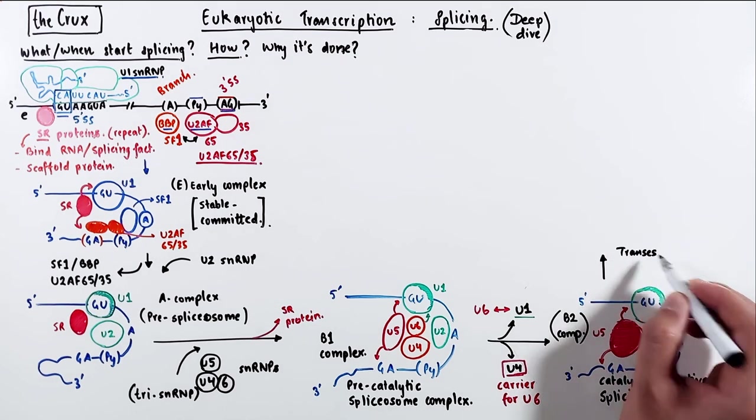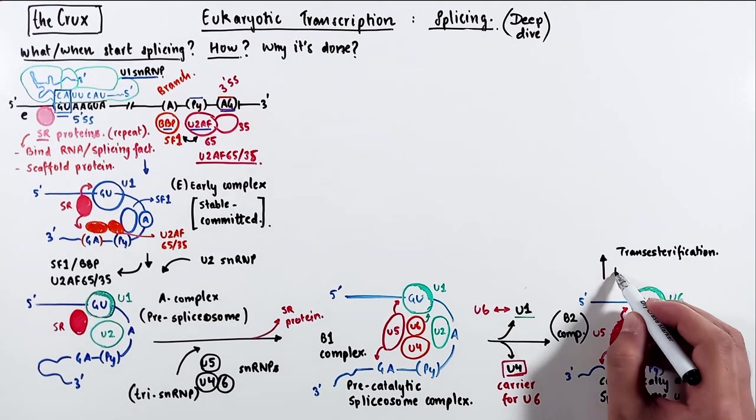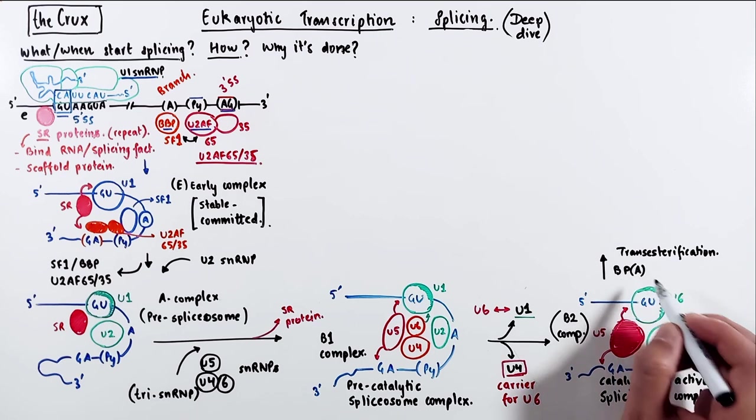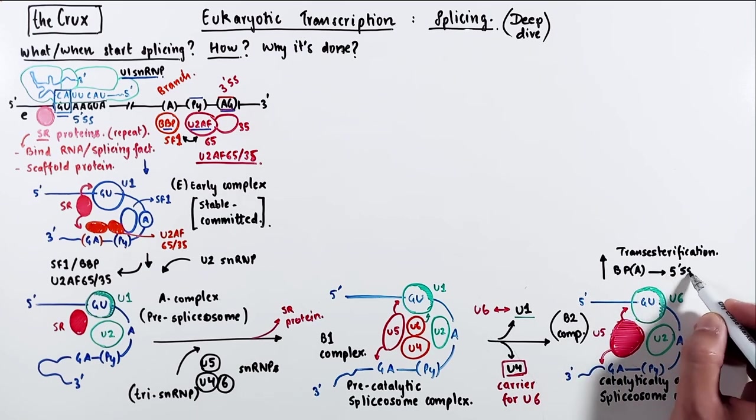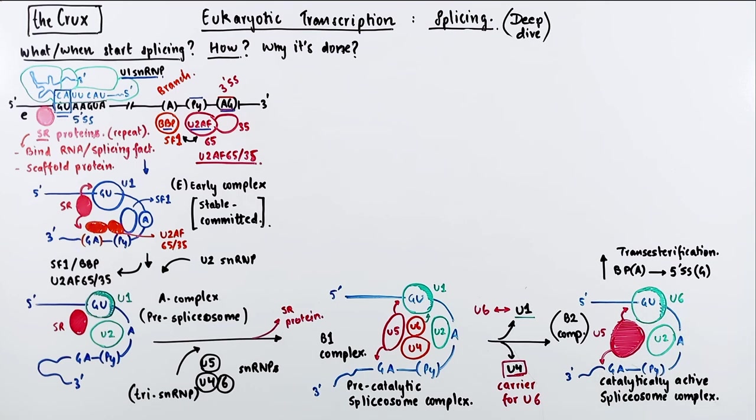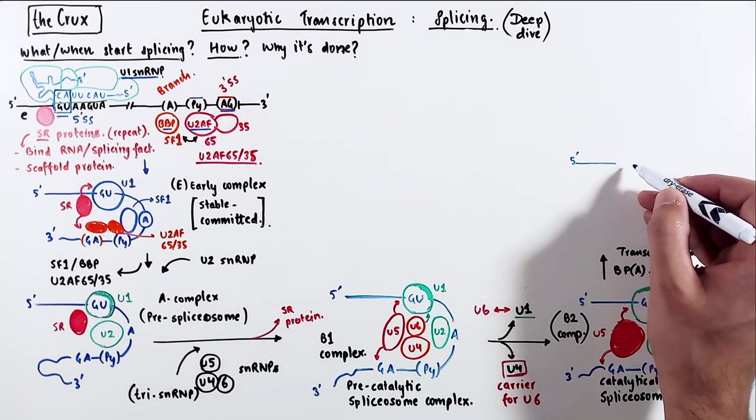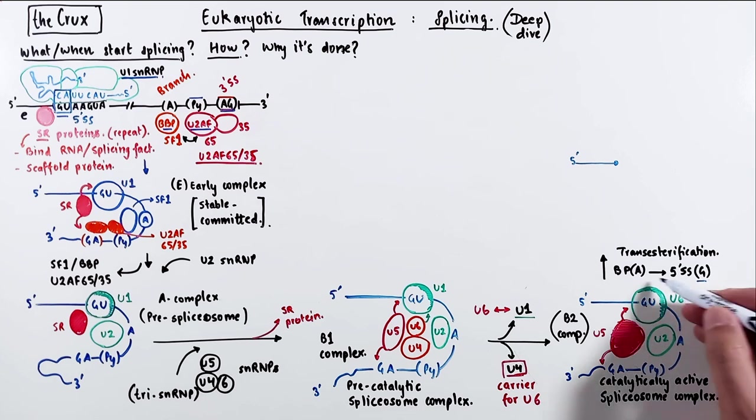and this is the catalytically active spliceosome complex. Now that this is active, it proceeds with the first splicing reaction, which is the transesterification, where the hydroxyl of the adenosine at the branch point attacks the phosphate of the guanosine at the 5' splice site,